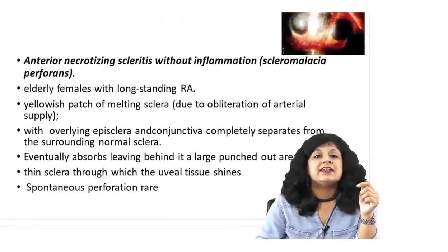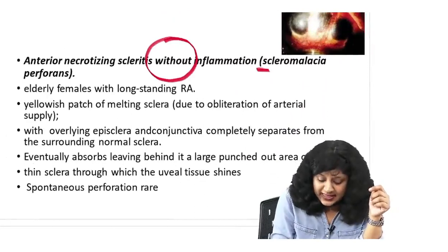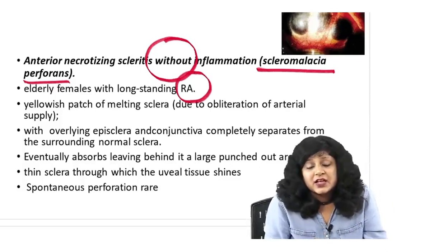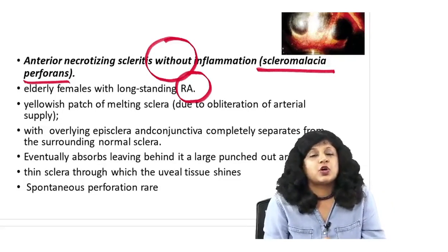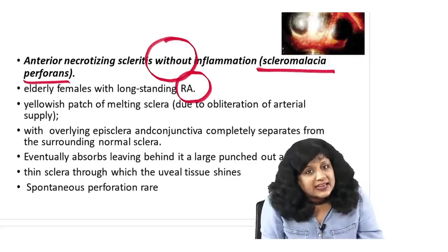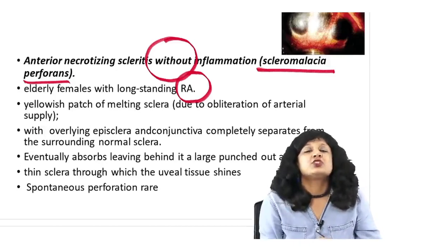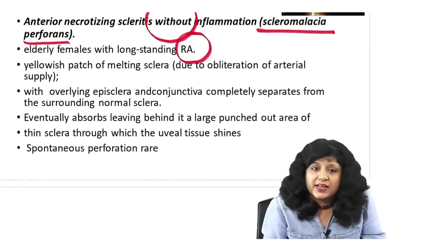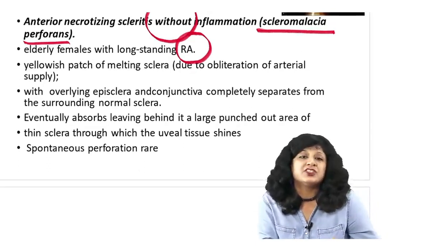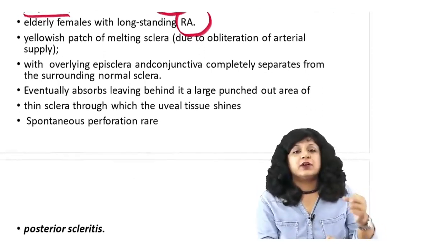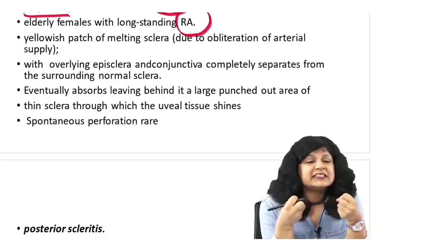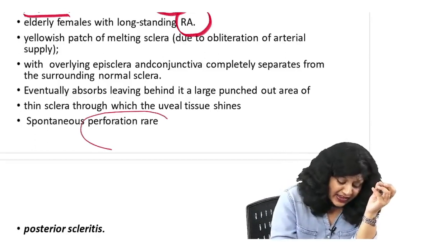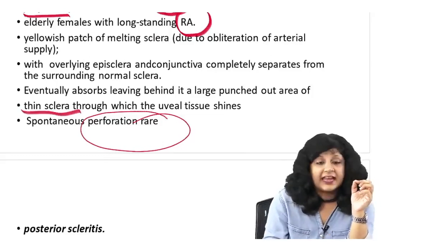Anterior necrotizing scleritis without inflammation is called scleromalacia perforans. This is found in patients with long-standing rheumatoid arthritis. The most common association of scleritis was rheumatoid arthritis, and the most common type of scleritis is anterior non-necrotizing diffuse. But the one specifically related with rheumatoid arthritis is anterior necrotizing. Here we have a yellowish patch — necrotizing patch — at the melting sclera. The overlying episclera and conjunctiva are kind of completely separating because that area is really ulcerated. Though perforation is rare, thinning of the sclera does take place here.